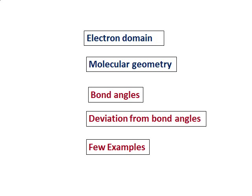In the last video you learned about electron domain and molecular geometry. Now I am going to focus on the bond angles and the deviation from the bond angles due to the presence of lone pairs, and I will take up some examples also.